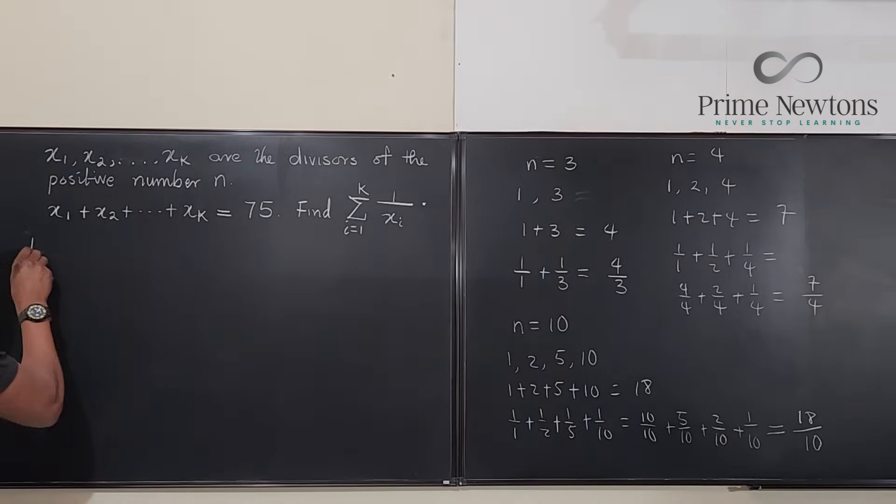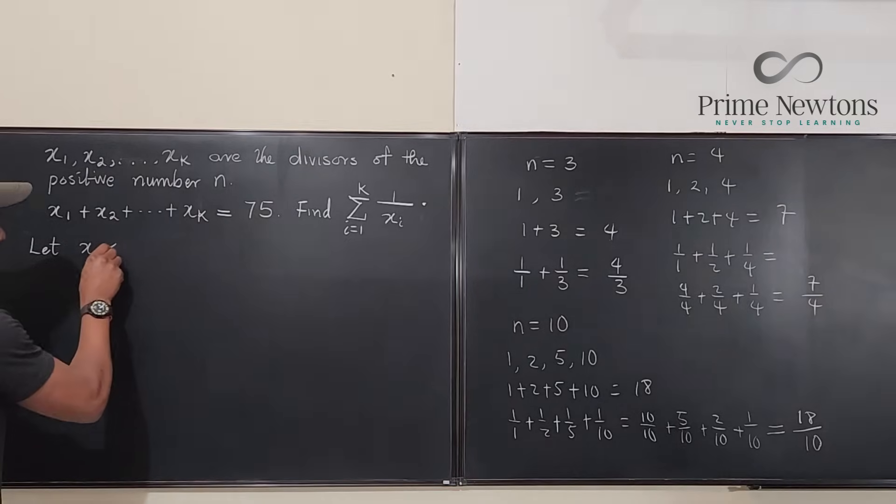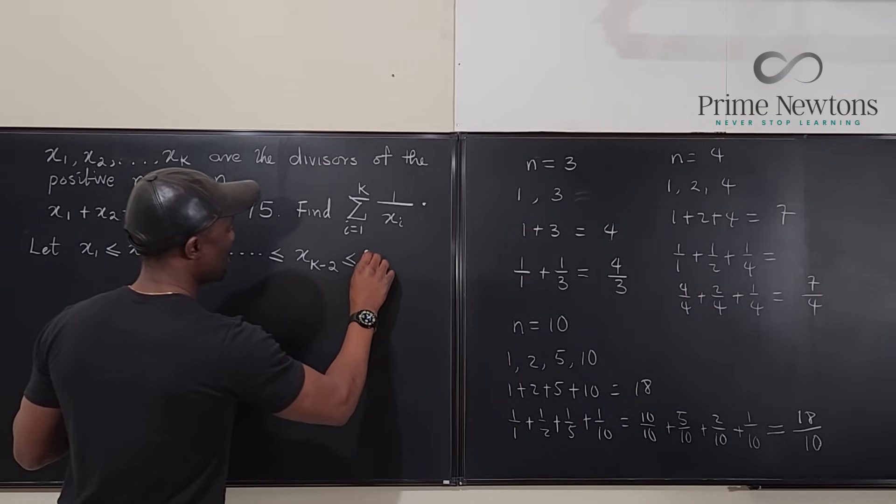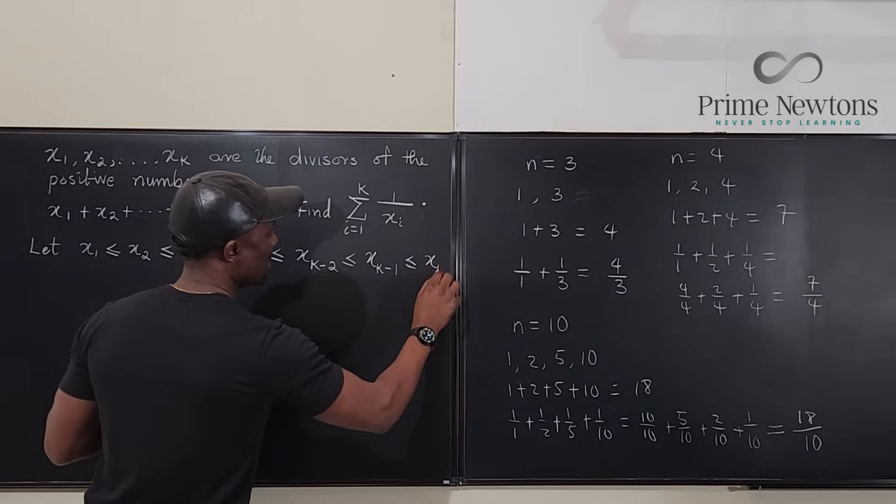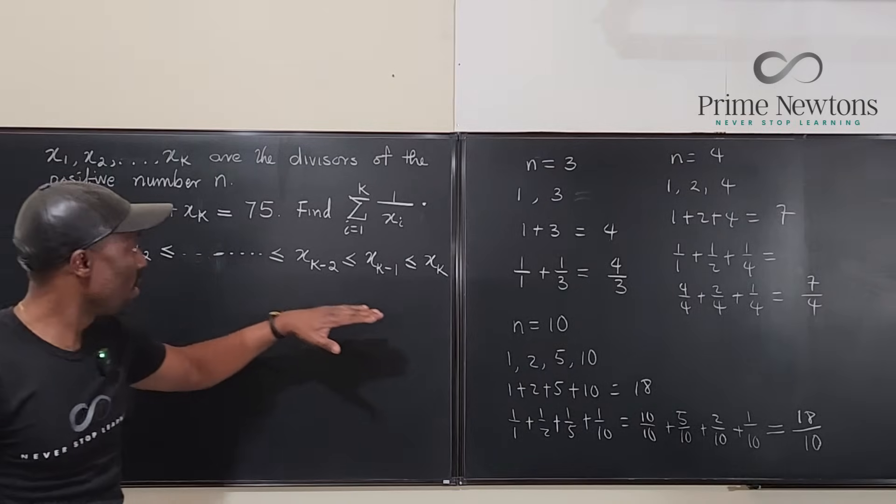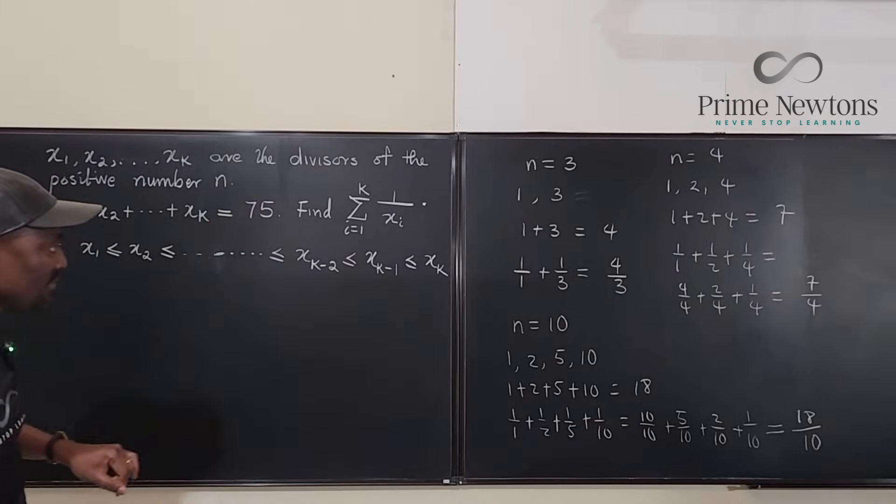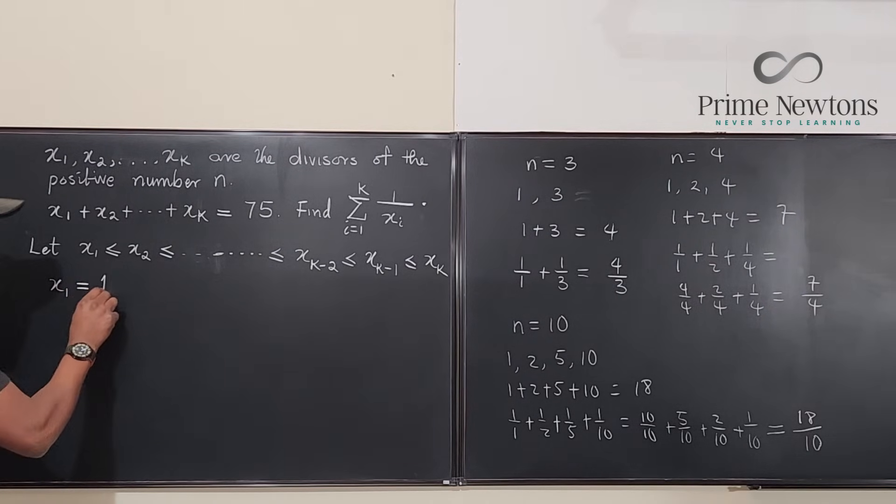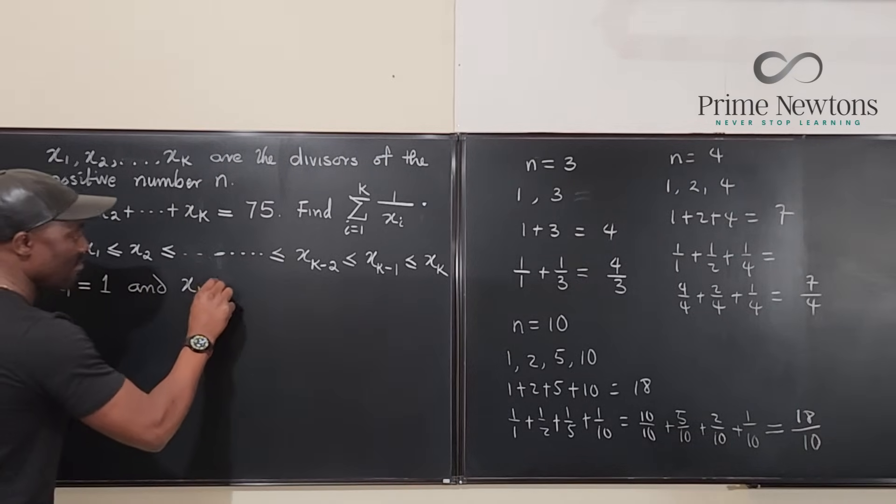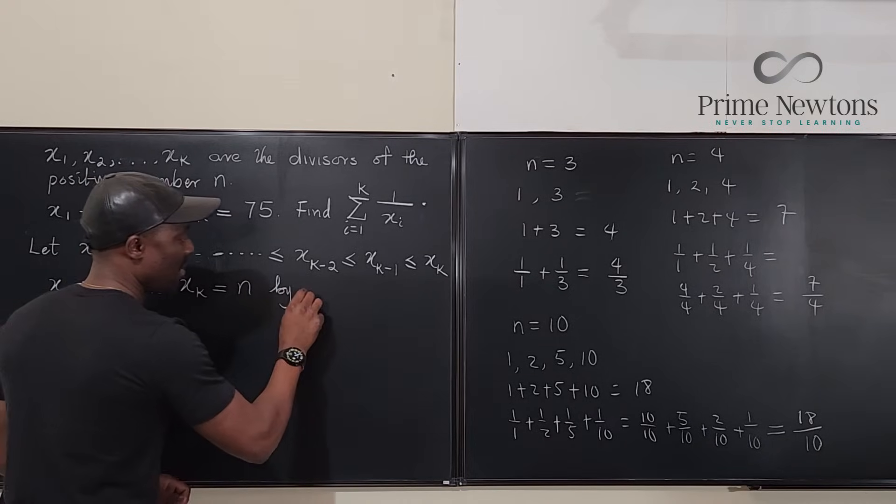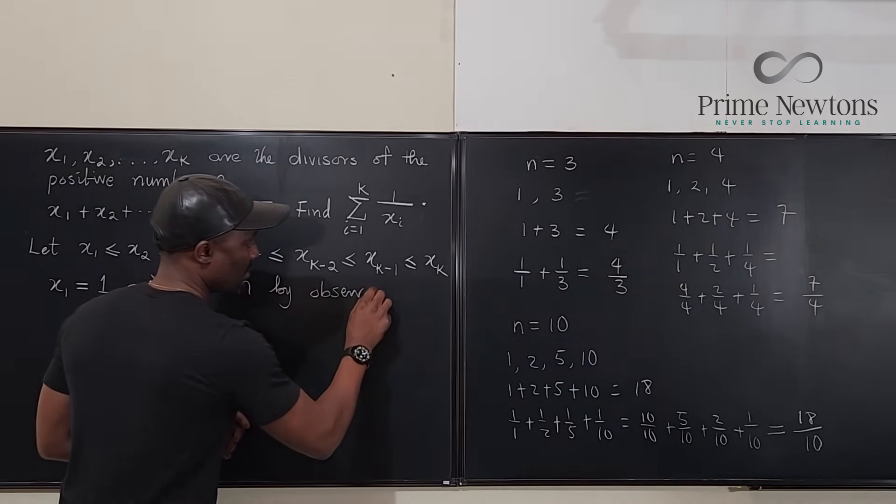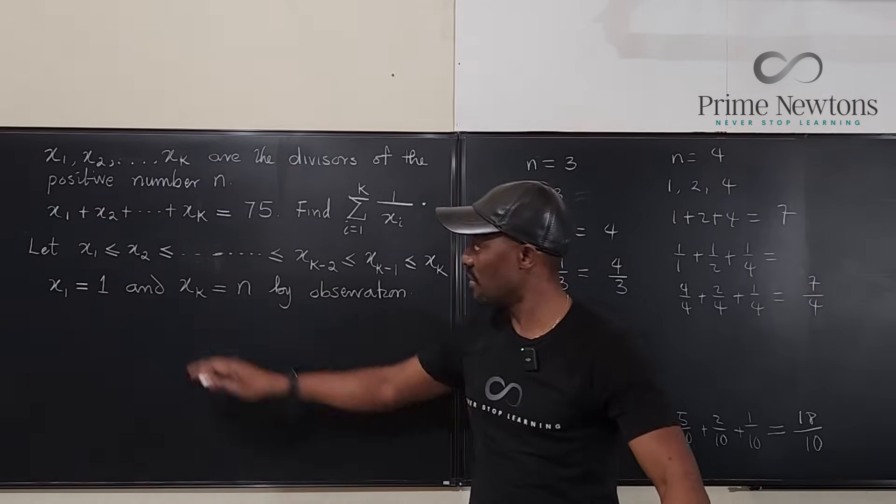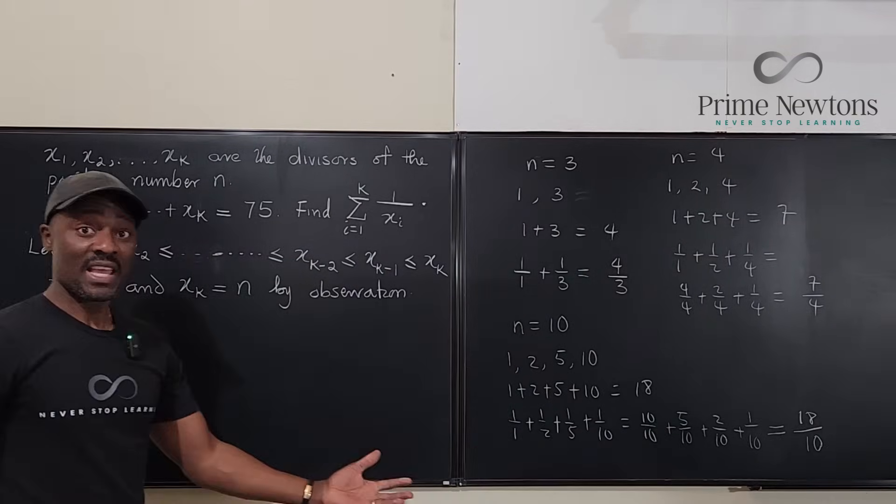So, we're going to say, let x1 be less than or equal to x2, less than or equal to x sub k minus 2, less than or equal to x sub k minus 1, less than or equal to x sub k. So, we've arranged all the factors of n. We can clearly see that x1 must be equal to 1. And x sub k must be equal to n by observation. The very last divisor will be the biggest divisor and it has to be the number itself. And the very first divisor, if you arrange in this order, will have to be this one. And a trend is established.